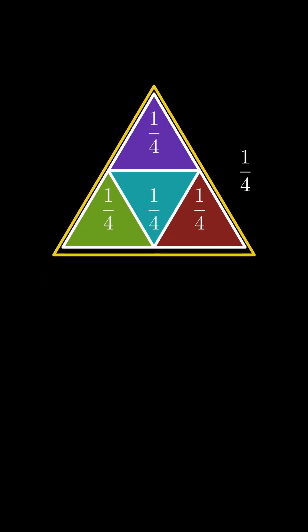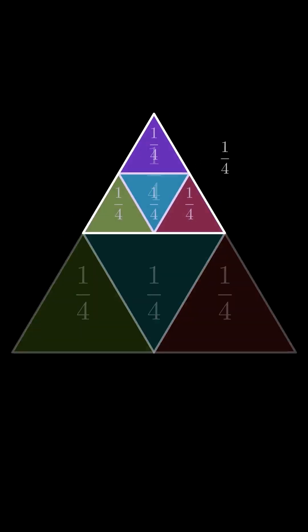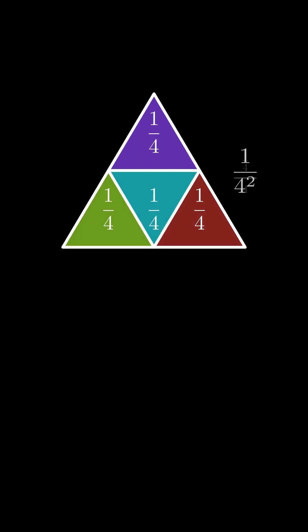Each part here is one-fourth of this triangle, which itself is one-fourth of the original triangle. So each of these parts is one-fourth squared of the original triangle.